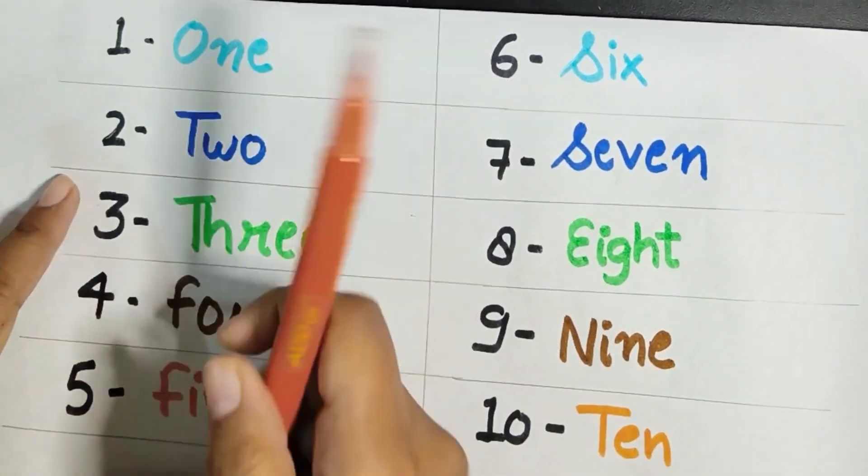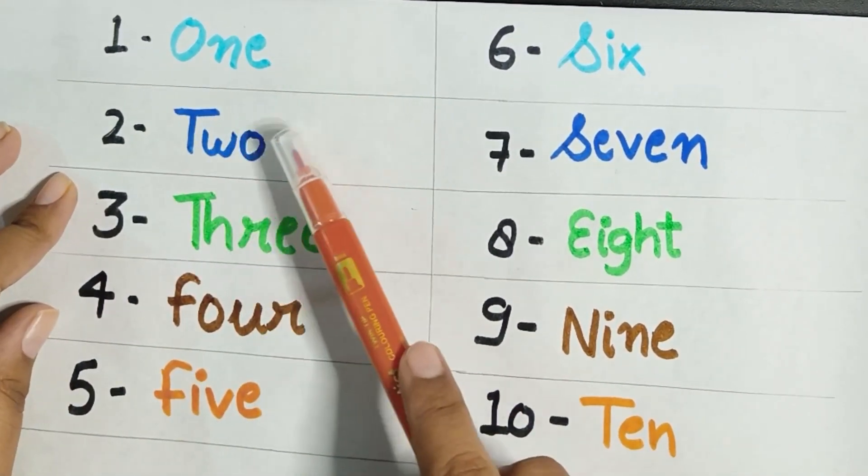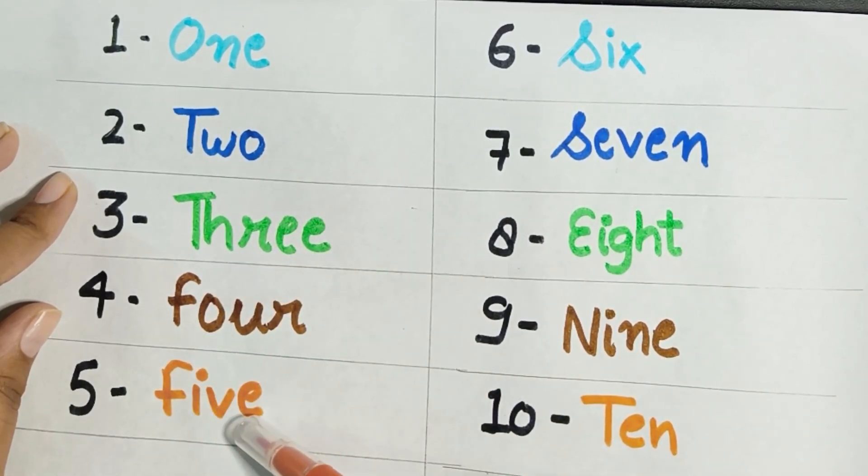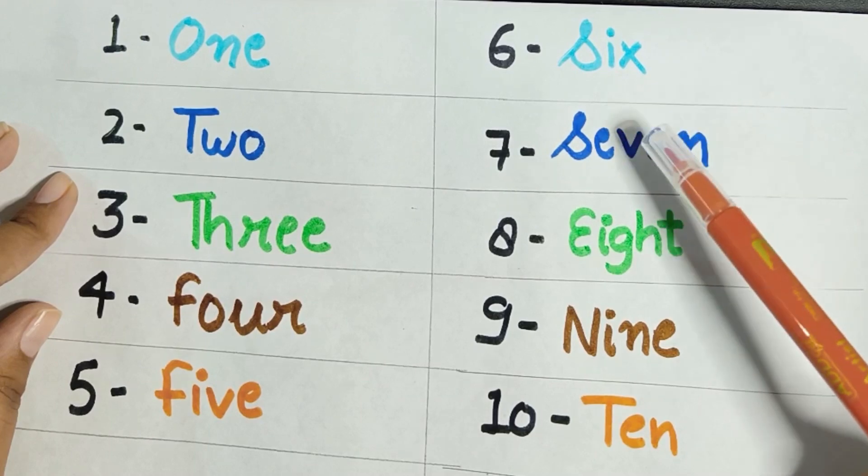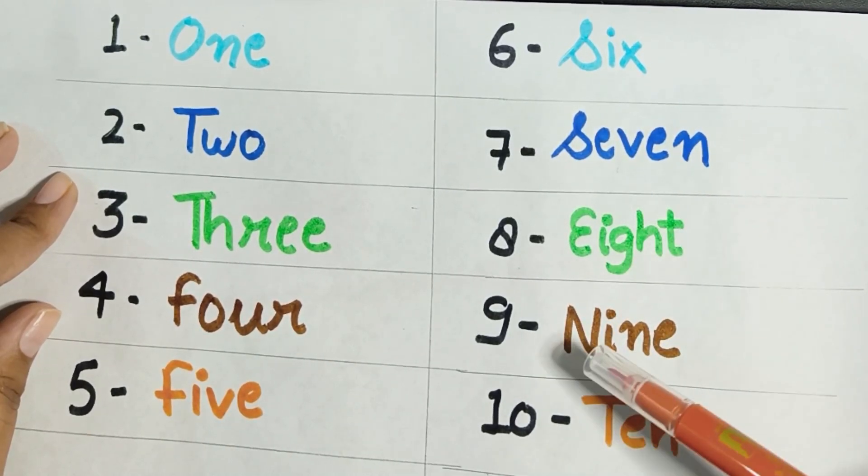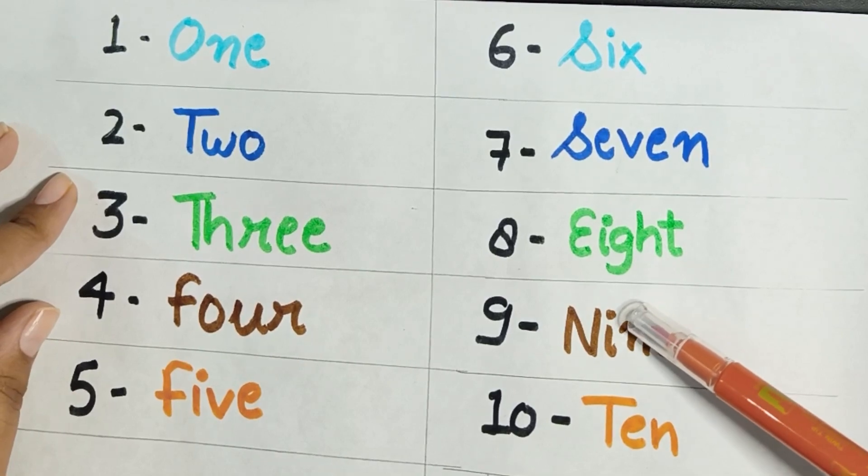T-E-N, ten. O-N-E, one. T-W-O, two. T-H-R-E-E, three. F-O-U-R, four. F-I-V-E, five. S-I-X, six. S-E-V-E-N, seven. E-I-G-H-T, eight. N-I-N-E, nine. T-E-N, ten.